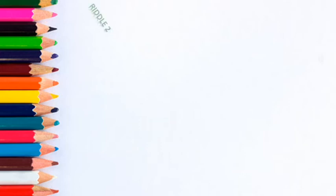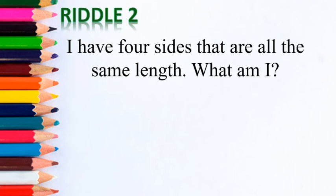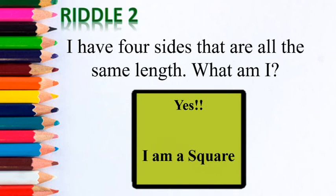Here is riddle two: I have four sides that are all the same length — what am I? Students, can you guess and tell the answer? I have four sides that are all the same length. The answer is — I am a square! And remember, the square has four equal sides.